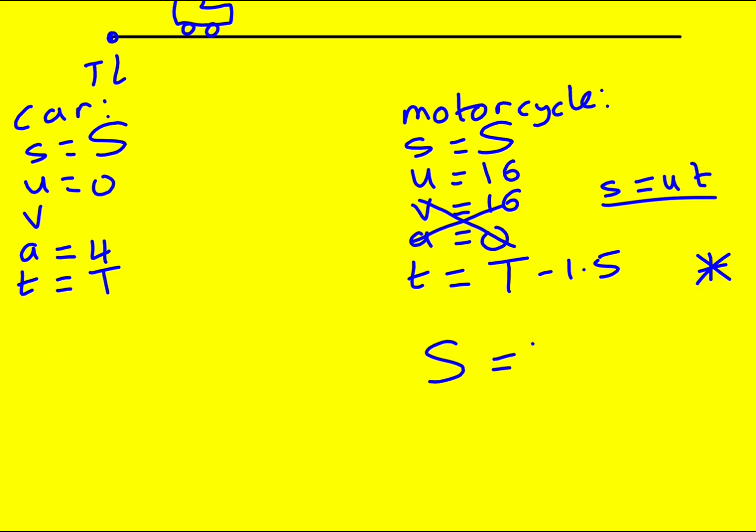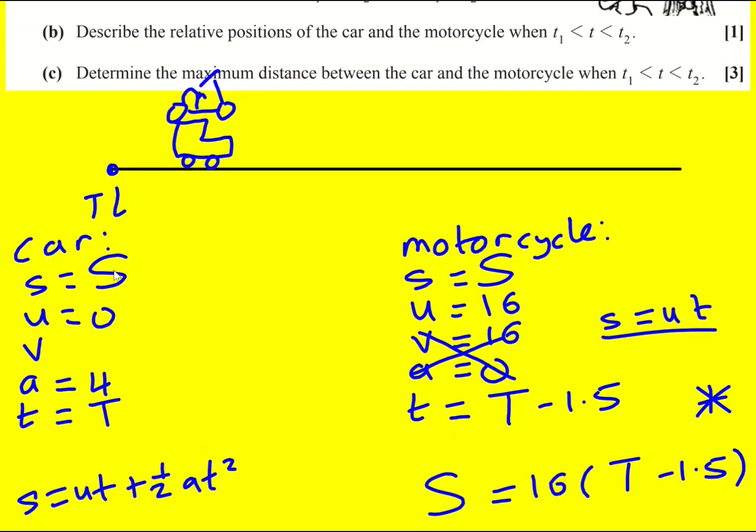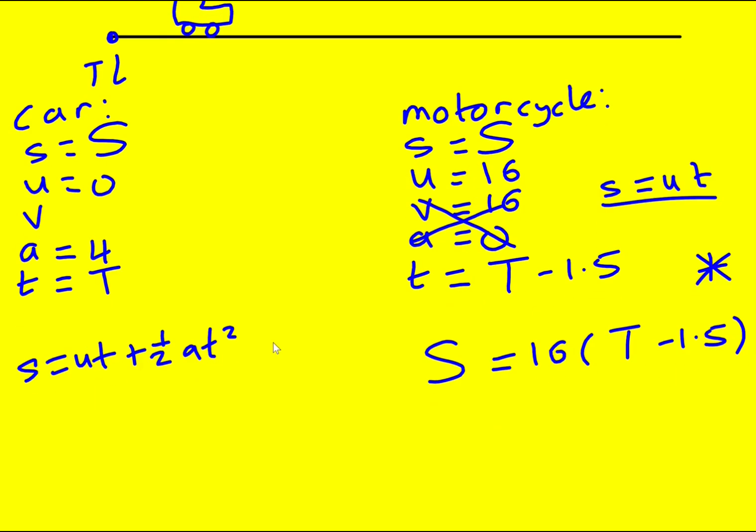So it's going to be S equals 16 times capital T minus 1.5. Whereas over here, I'm going to use S equals ut plus half a t squared. I'm applying SUVAT to both. And I'm looking at the time interval between the displacements being the same. So then S is going to equal, well, u is 0, so that helps. So it's going to be 2t squared, sorry, 2 capital T squared.